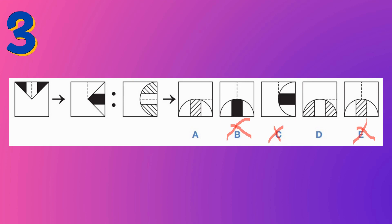We're left with options A and D. The semicircle has moved clockwise, which looks the same in both A and D. However, the fill pattern is interchanged: the middle part should have a lined pattern and both sides should be plain. Option A has the middle part lined with plain sides, but option D keeps the same pattern as the original question, so we rule out D. Option A is the correct answer.